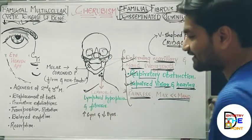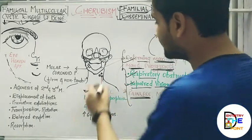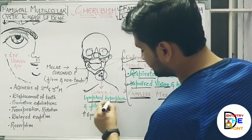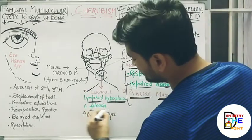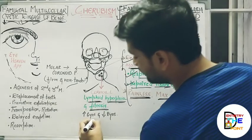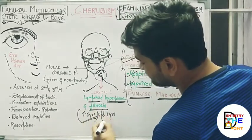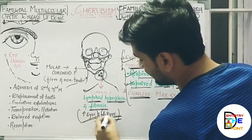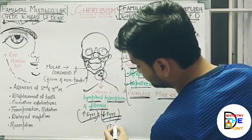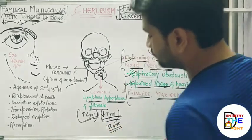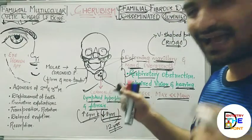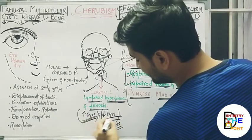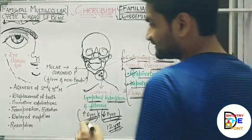The second clinical feature is cervical lymphadenopathy — enlargement of the cervical lymph nodes. There will be lymphoid hyperplasia, an increased number of cells, and fibrosis. This increases until the age of 6 years, then decreases or regresses by 8 years, and sometimes continues until 12 years of age.